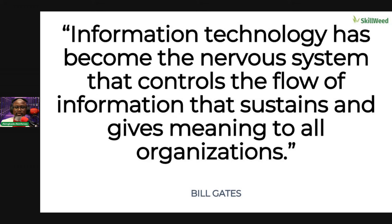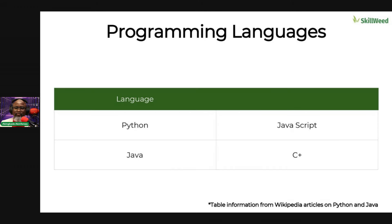Here's a good quote: 'Information technology has become the nervous system that controls the flow of information that sustains and gives meaning to all organizations.' Some popular programming languages include JavaScript, Java, C++, and Python.